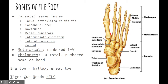Then you have the metatarsals — just like we had metacarpals in the hand, these are the metatarsals. They're numbered 1 through 5 with the Roman numeral system: I, II, III, IV, and V. And then you have the phalanges, which are actually the same as the hand. If you look at the medial phalanges, you only have two — the proximal and the distal — but the others all have three: the proximal, middle, and distal phalanges.